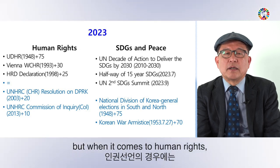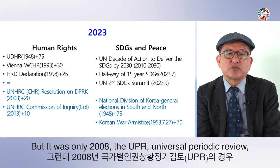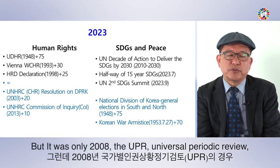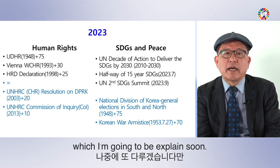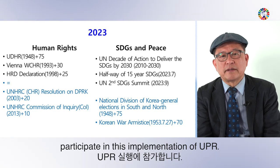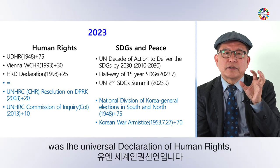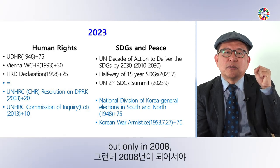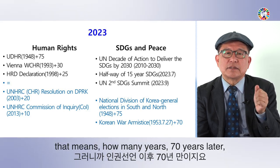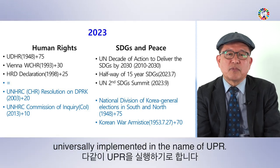Almost all countries are participating in SDG implementation. But when it comes to human rights, it has been politically controversial from the beginning. It was only in 2008 that the Universal Period Review — UPR — was introduced, meaning all member states participate in its implementation. So although the UDHR was adopted in 1948, universal implementation through UPR came 60 years later.